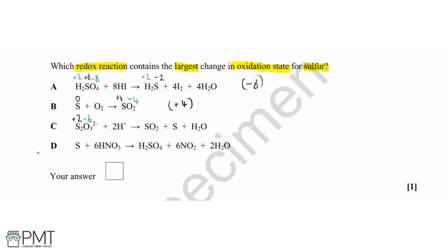And then on the right-hand side, we've got two different sulfur-containing compounds. Our elemental sulfur has an oxidation state of zero, and our sulfur dioxide — as we worked out above — has an oxidation state for the sulfur of plus four. So our biggest change here is just a change of two: a change of minus two and a change of plus two.